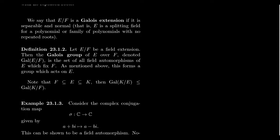This long discussion is just to tell us that over the fields we really care about — finite fields and characteristic zero — we don't have to worry about separability; it's automatic. With that description of separable extensions, we can define what a Galois extension is. E extends F. We say this extension is a Galois extension if it is both separable and normal. Recall that a field extension is normal if it is the splitting field for some collection of polynomials with no repeated roots.